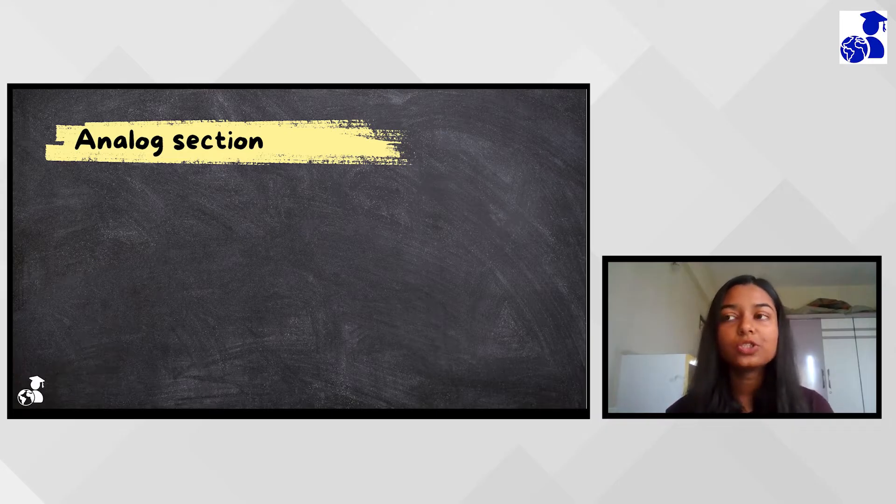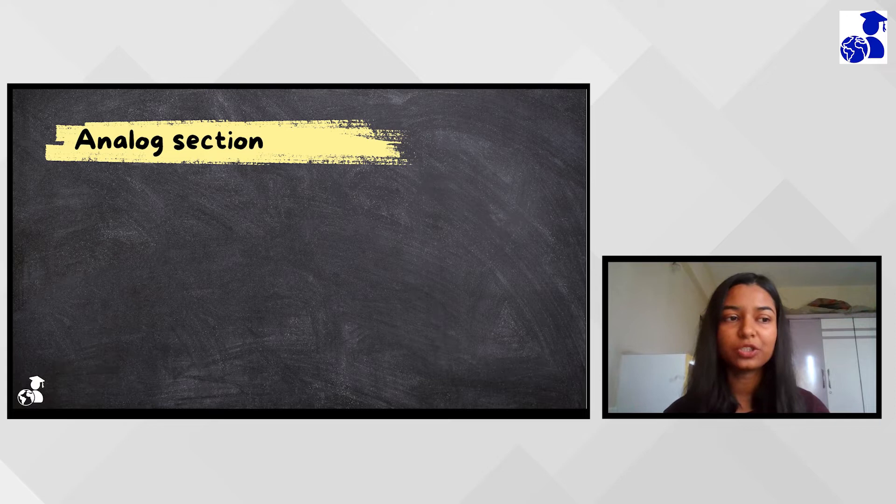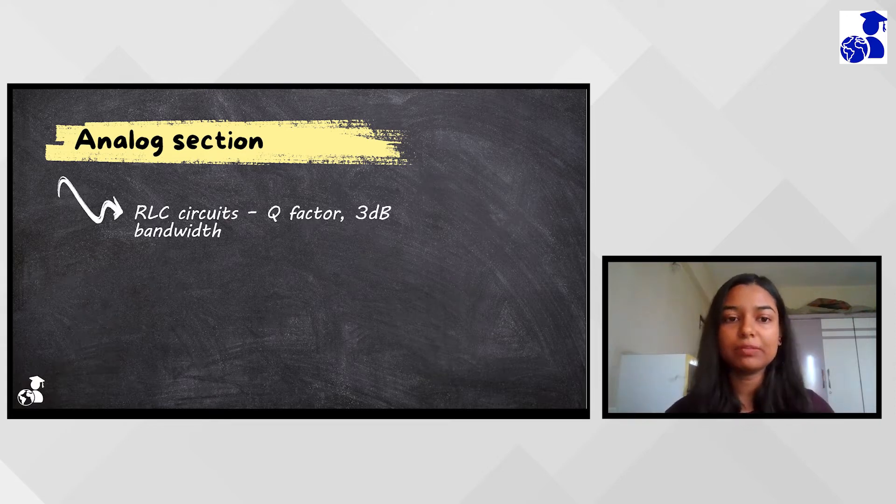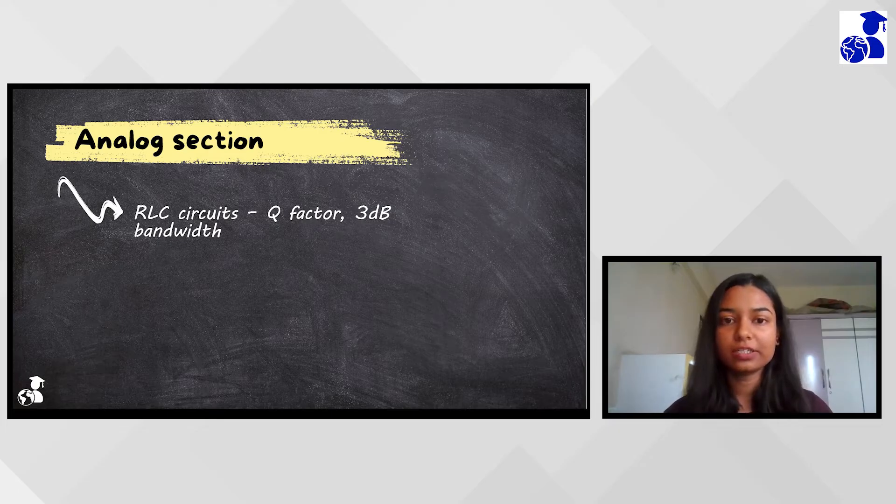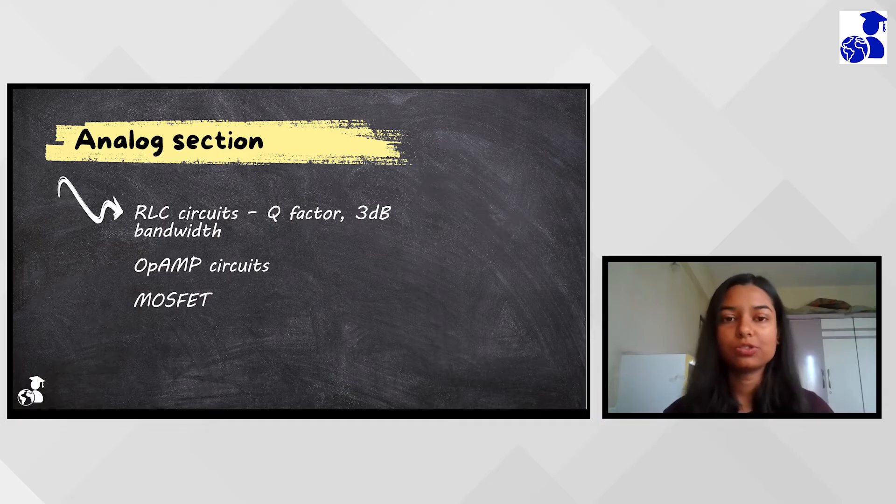In the analog section, there were mainly questions from RLC circuits where we had to find the Q factor and 3dB bandwidth. There were questions on op-amps to find the gain and output, and also questions on MOSFET DC analysis and AC analysis.